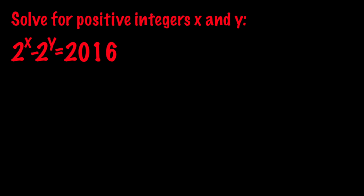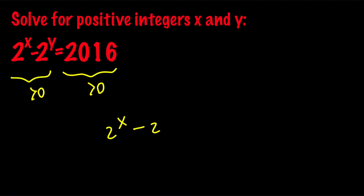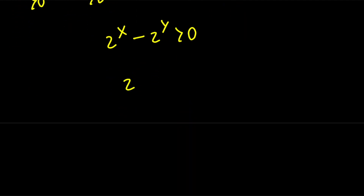Let's start with the fact that 2016, which is the right-hand side of our equation, is positive. Therefore, the left-hand side must be positive, which means that 2 to the power of x minus 2 to the power of y is positive, which means that 2 to the power of x is greater than 2 to the power of y, which means that x is greater than y.